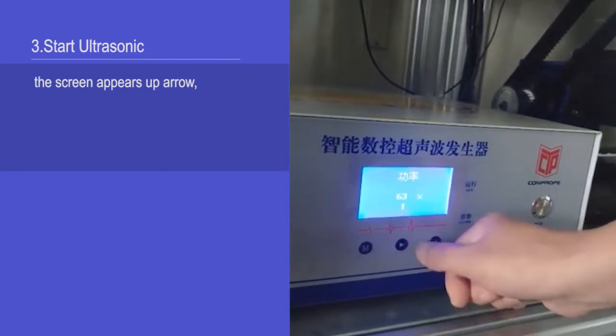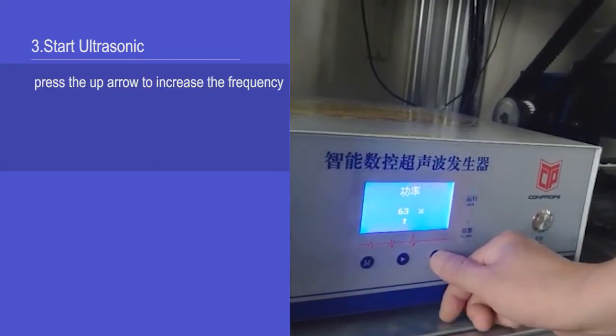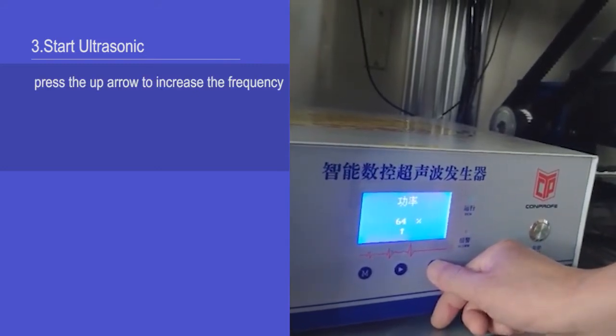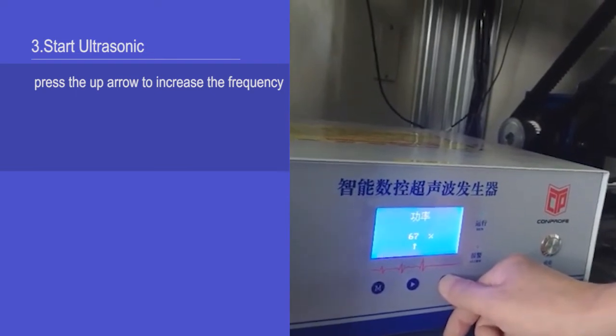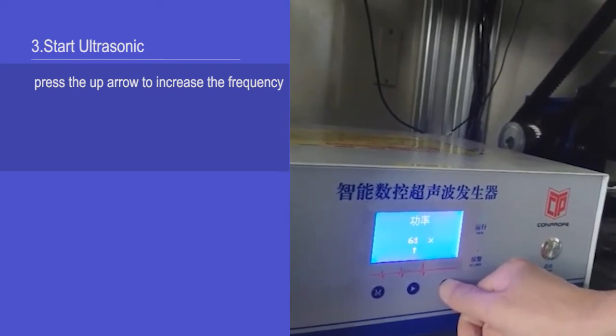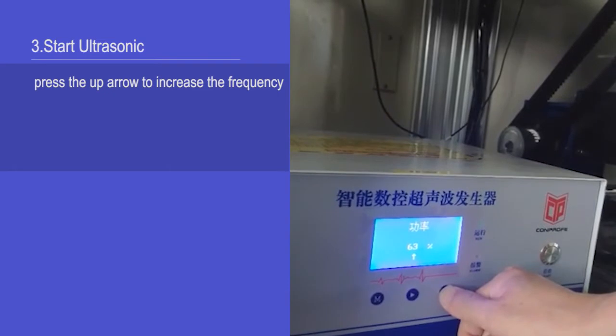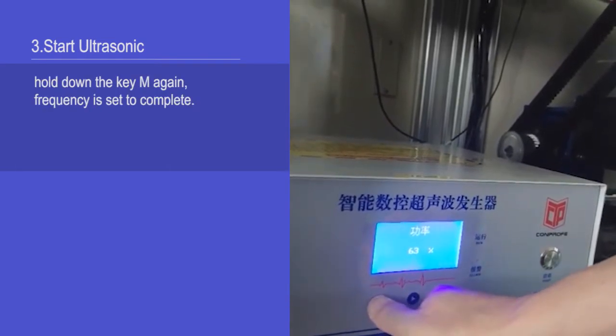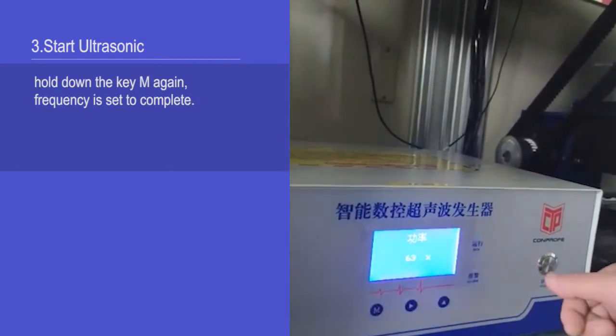The screen appears the upper arrow. Press the upper arrow to increase the frequency. Fold down the KM again. Frequency is set to complete.